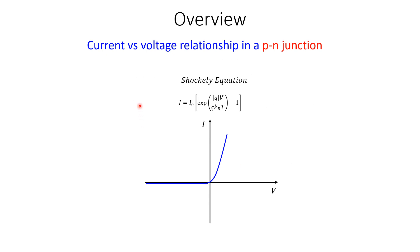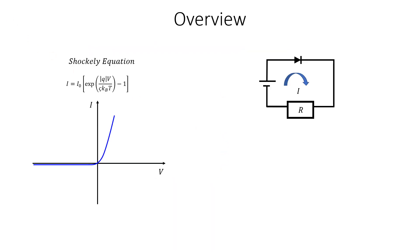Now let me give you an idea of why we need statistical physics in this course. Our main goal is to understand the current versus voltage relationship in a PN junction. This relationship is captured by Shockley equation, which I'm showing here and which we will derive in this course. I is the current, V is the voltage, and this is a plot of Shockley equation.